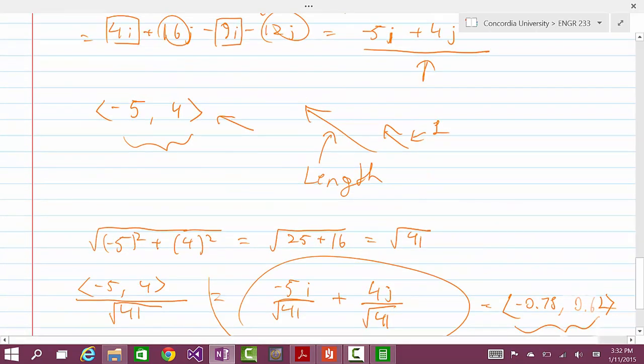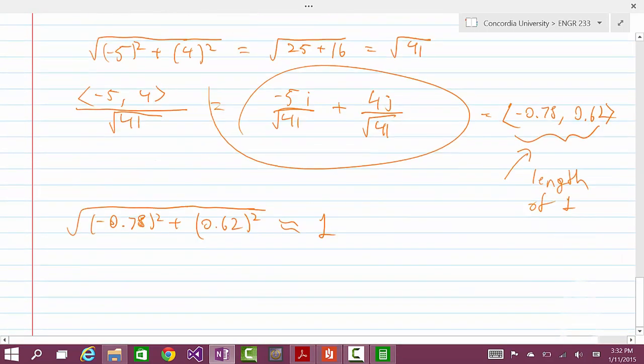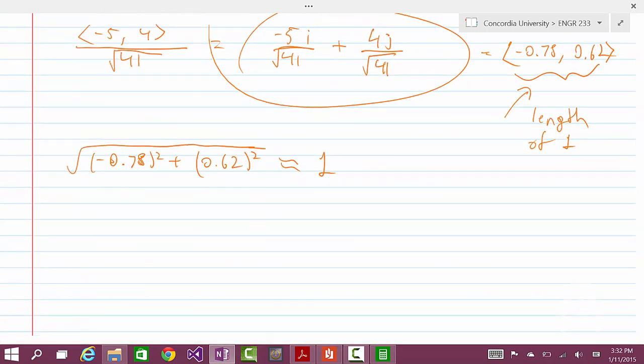So this is very close to one. So again, this is a unit vector because it has a length of one and has the same direction as this vector right here. So yeah, so that is the answer. If you have any questions please let me know and have a great day.